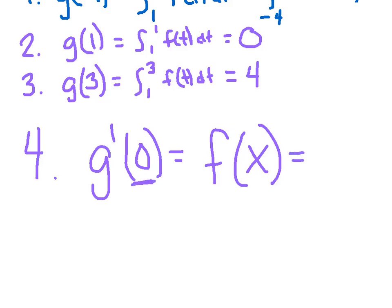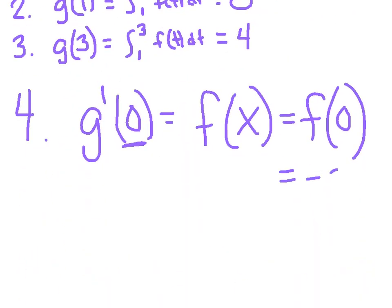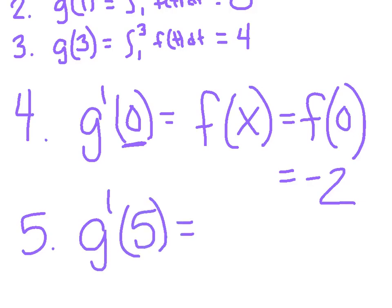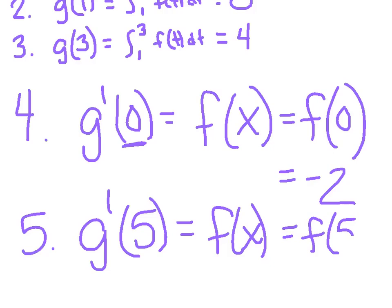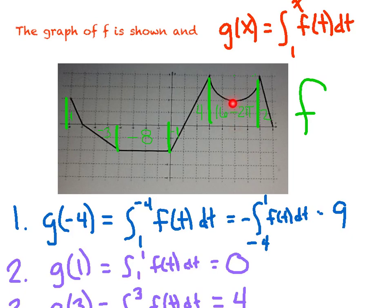I just plug in the 0 to get f of 0. Going back to the directions — this is a graph of f — I evaluate f at 0 by finding x equals 0 on the graph and looking at the height. It's sitting at negative 2, so f of 0 equals negative 2. For number 5, g prime of 5: the derivative of g is f of x, evaluated at 5 gives f of 5. Looking at the graph at x equals 5, it has a height of 2.